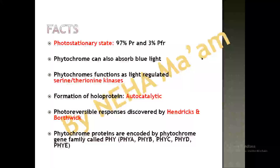Phytochrome is known to exist in a photostationary state where 97% of the PR form is present and 3% is PFR — so the whole PFR cannot be completely converted into PR. Phytochrome can also absorb blue light, so it absorbs red light, far-red light, and blue light, which is why it is also known as a blue pigment.